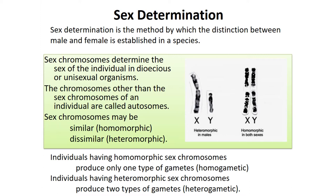The chromosomes other than the sex chromosomes are called autosomes. Sex chromosomes may be homomorphic (similar) or heteromorphic (dissimilar). Individuals having homomorphic sex chromosomes produce only one type of gamete — homogametes, where all gametes carry the same chromosomes.